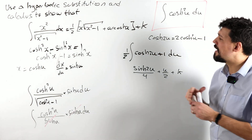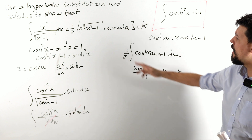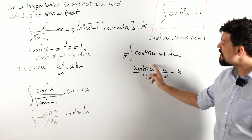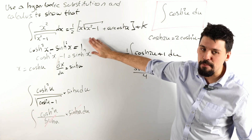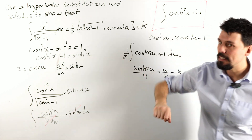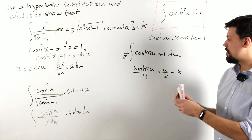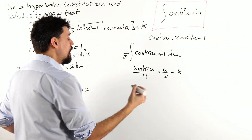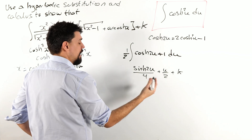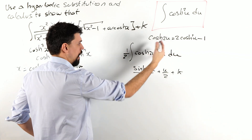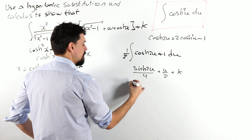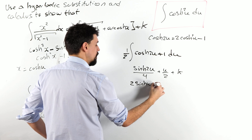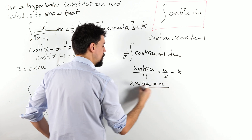Let's just check back in with what we're looking for. arcosh(x) will pop out from here, which is quite nice. Now I've got a sinh(2u) that I need to get back in terms of x. So a little bit of work still to come. We can use our compound angle formula: sinh(2u) equals 2 sinh(u) cosh(u).